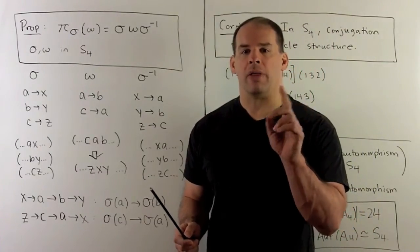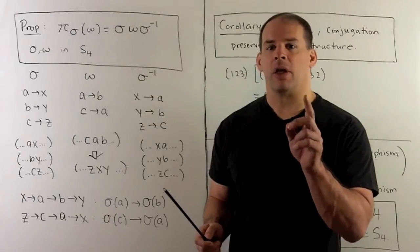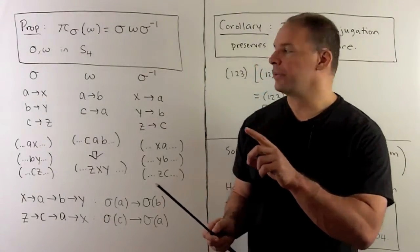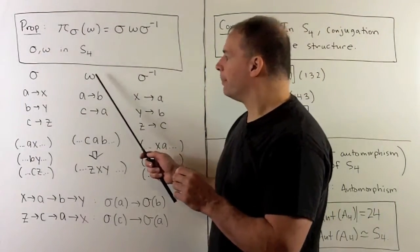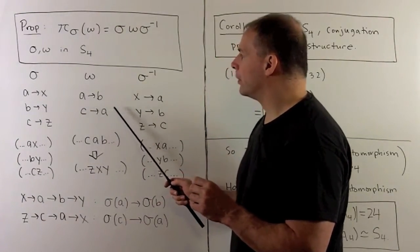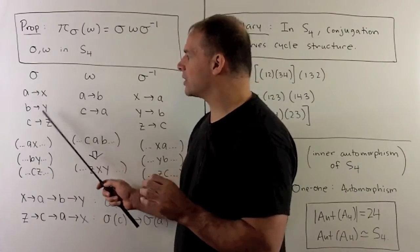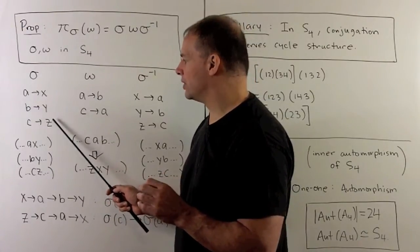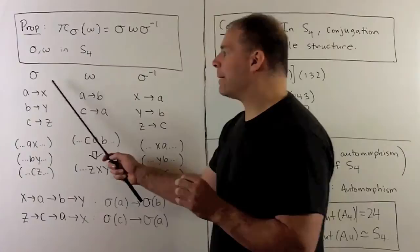For our bookkeeping, I want to focus on all the elements that map into A and all the elements that map out of A. So in ω, I'll have A going to B, C going to A. And in σ, I'll just use the labels A goes to X, B goes to Y, C goes to Z.